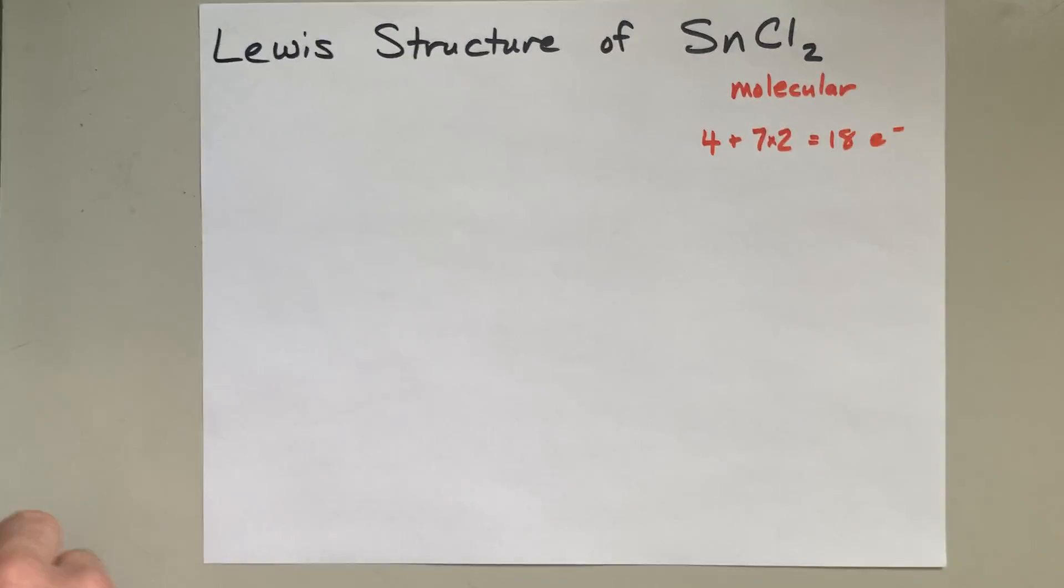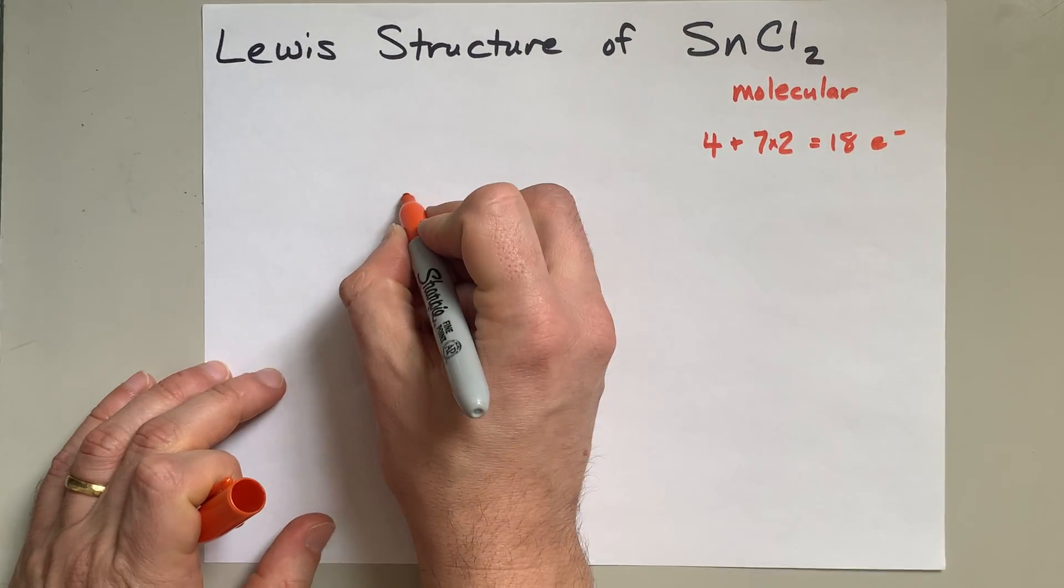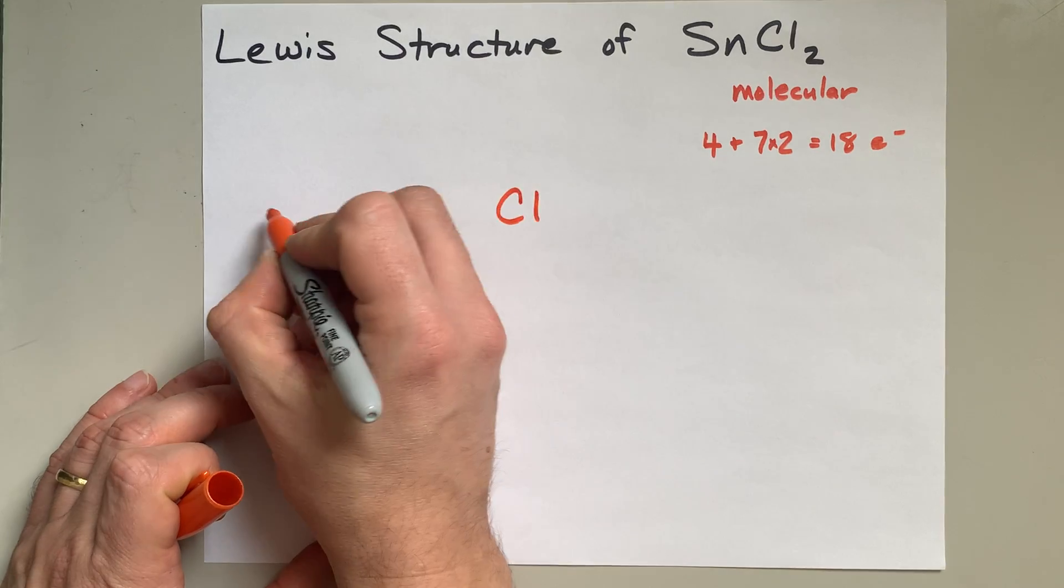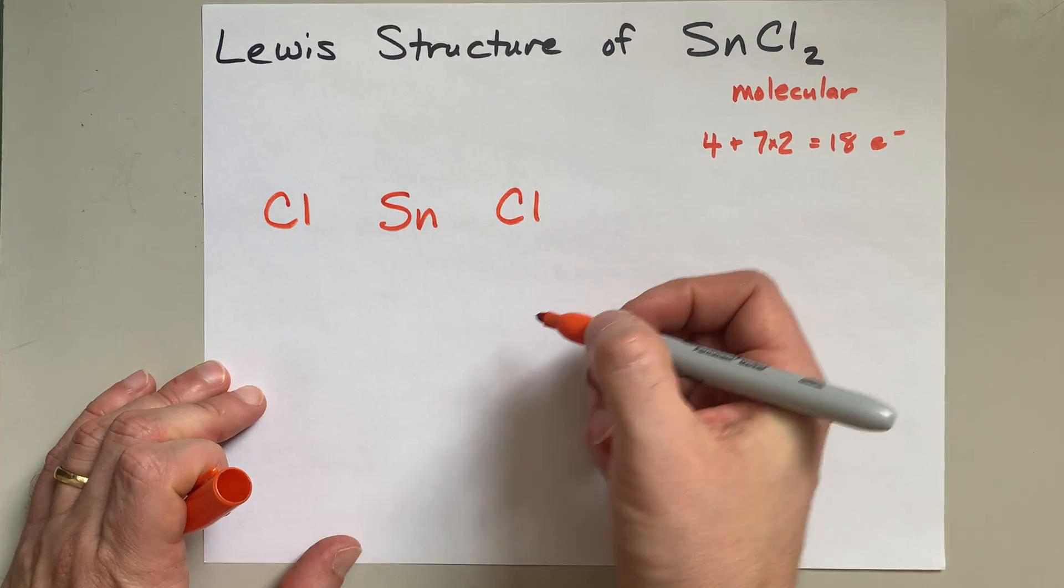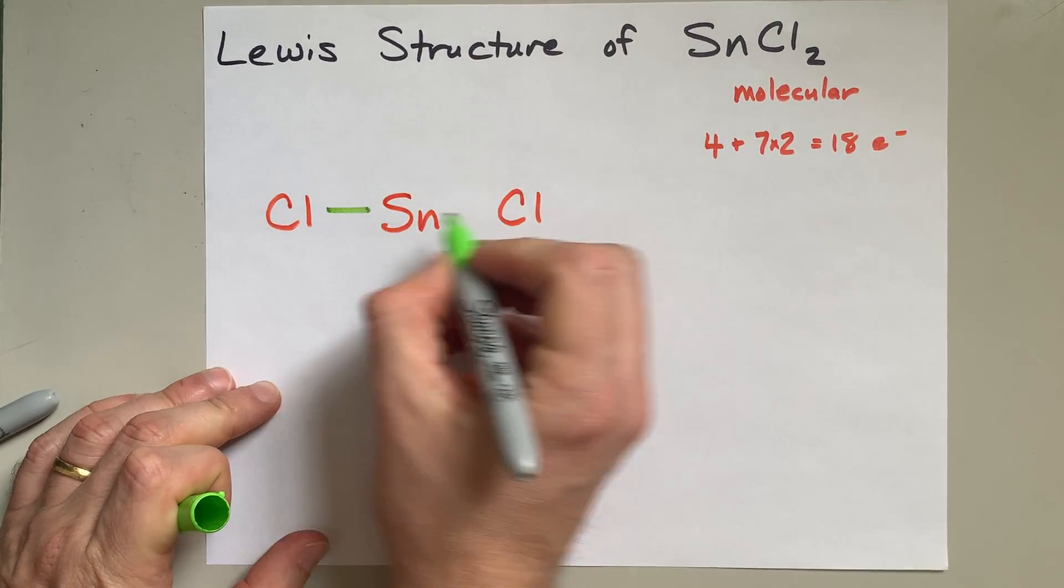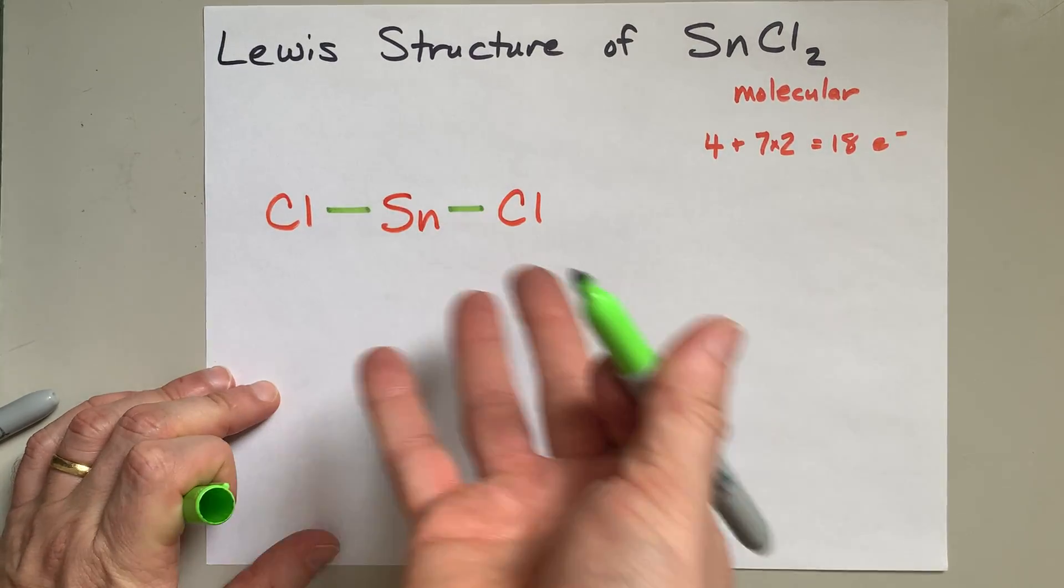Now, the way I draw my structures is to put my central atom in the center and then surround it with the outer atoms. There's two chlorines. Then I connect the outer atoms to the central atom, because if they weren't bonded, it wouldn't be a molecule.